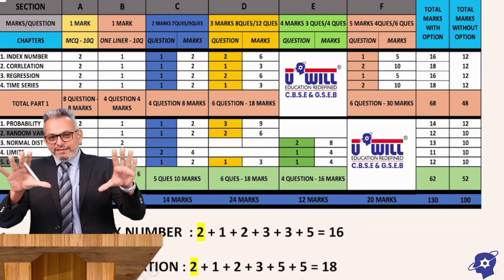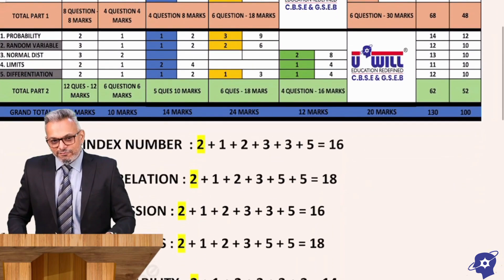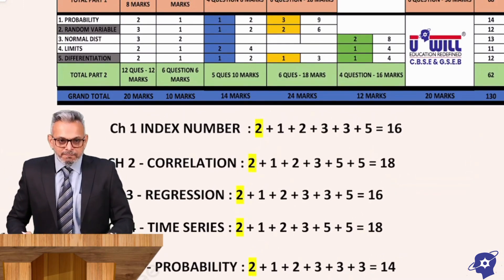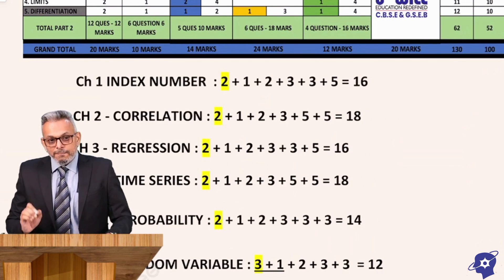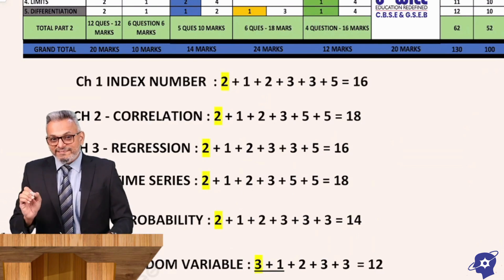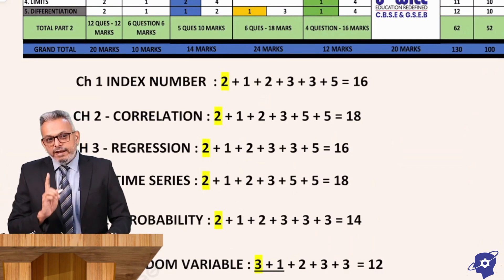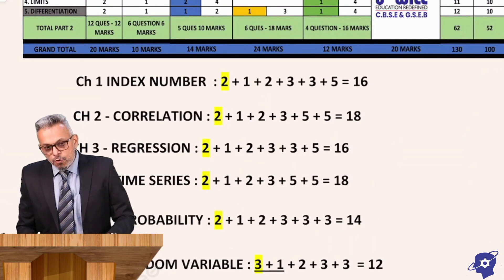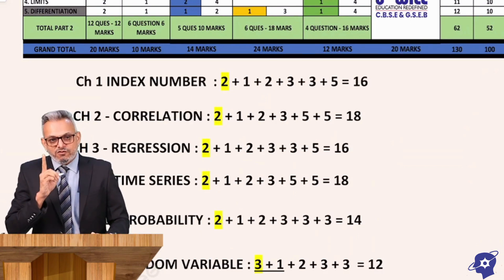This whole thing on the back screen can create a lot of confusion, so let's simplify it. We start with the first chapter. In your book, please write down the name of the chapter, that is Index Number. In Index Number, you write 2 + 1 + 2 + 3 + 3 + 5 which is equal to 16.